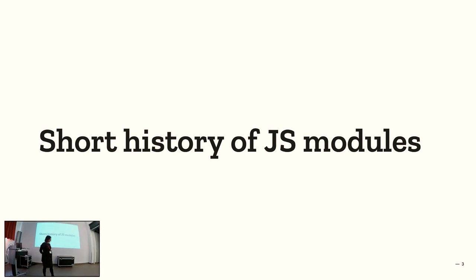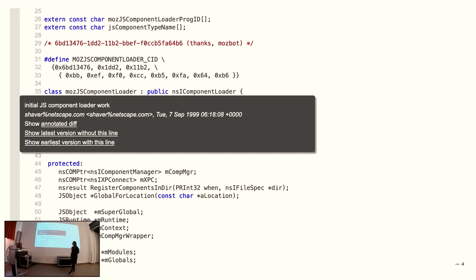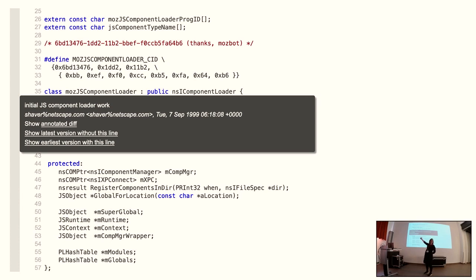To get us started, I'll give you a short history of modularization for JavaScript. Many languages introduced modularization earlier than we did, but there's a bit of context there. Here is a snippet of code from the Firefox code base — it says 'initial JS component loader work', dated September 7th, 1999. This is a piece of code that allows you to load what we might refer to as server-side JavaScript in the Firefox browser.